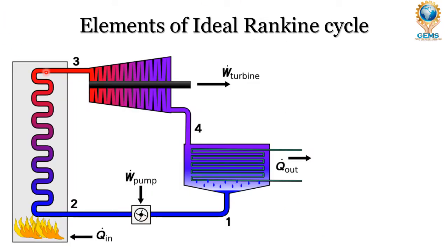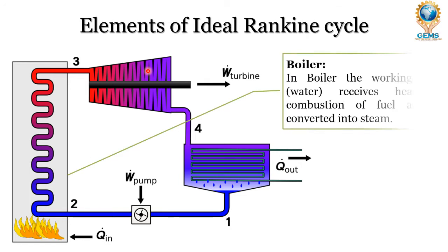This is how the ideal Rankine cycle looks like. We can see what elements are used in the ideal Rankine cycle. The first one is the boiler. In the boiler, the working fluid — that is, water — receives heat by combustion of fuel and is converted into steam.